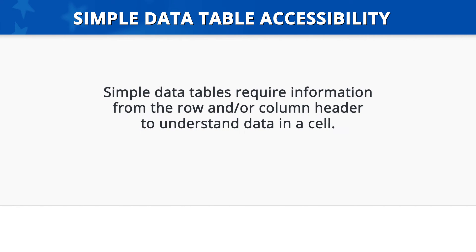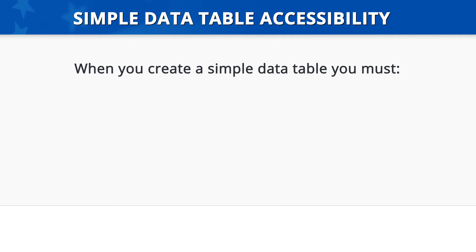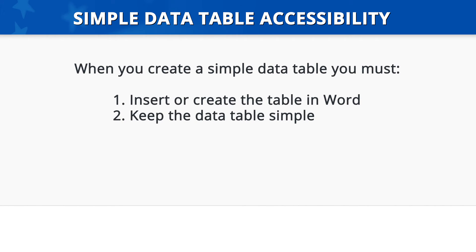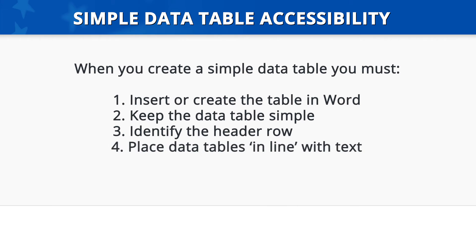Simple Data Table Accessibility. To review, a simple data table requires information from the row and/or column header to understand data in a cell. When you create a simple data table, you must do the following: 1. Insert or create the table in Word — you cannot make images of tables accessible. 2. Keep the data table simple — only use one row of column headers and do not merge or split cells. 3. Identify the header row. And 4. Place data tables in line with text.